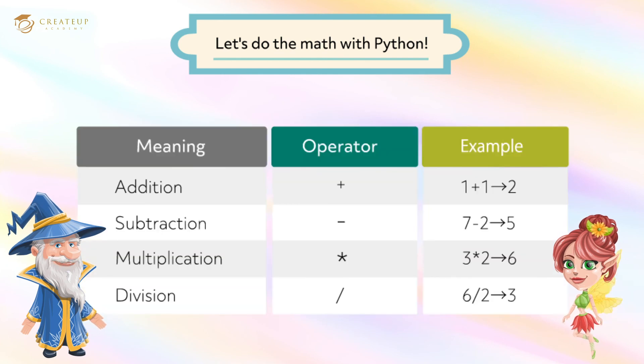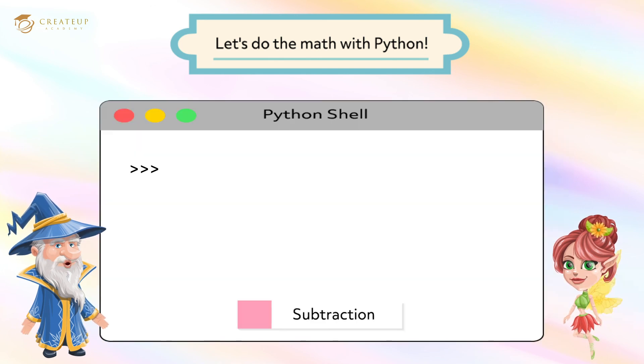In addition to addition, you can also subtract, multiply, and divide. The symbols used at this time are called operators. The types of operators are shown in the table. Great! Python can do various calculations using these operators. Now let's do the subtraction.